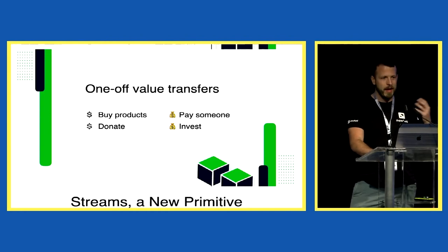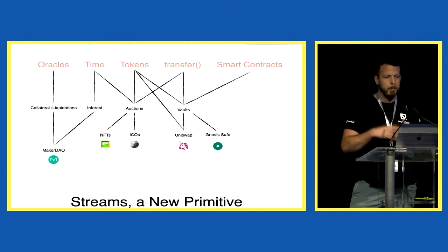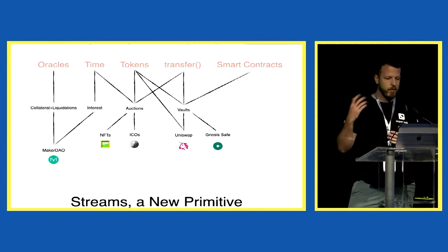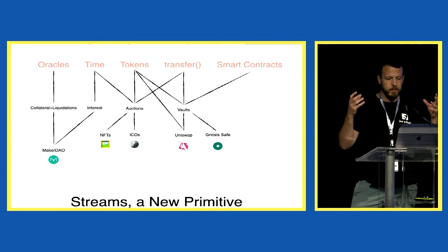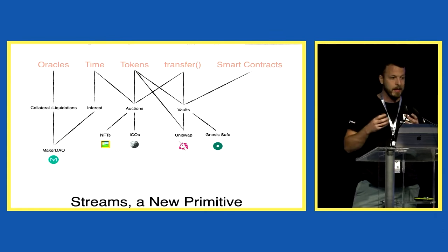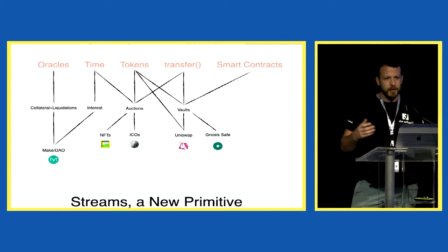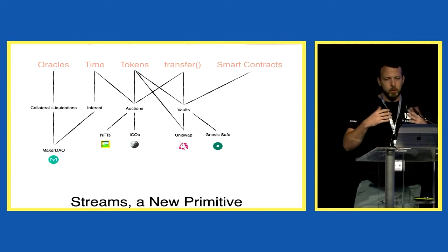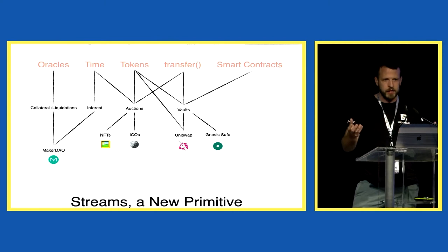In DeFi, by incorporating transfers into other primitives, we've created a bunch of things. We have oracles, we have smart contracts that can hold a balance. The first basic thing we did was create a smart contract that can hold a balance and transfer money out — we call these vaults. In Bitcoin that's it, but in Ethereum you can build more complex logic into those vaults and create everything else we know. A vault at the basic level just holds funds, transfers funds out, or receives funds and does things with them.